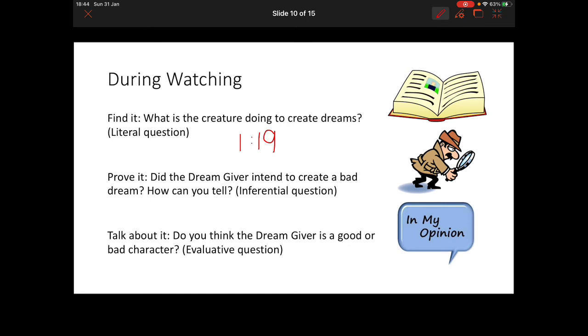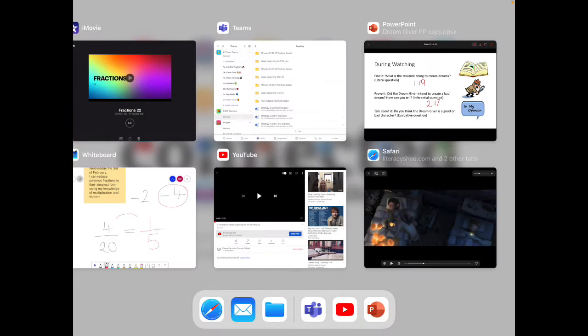Our next question. This is a prove it question, an inferential question. So that's why I've got a little detective next to this question as we have to use our text clues and our prior knowledge to help us answer this. Did the Dream Giver intend to create a bad dream? How can you tell? If you go to 2 minutes and 17 seconds on the clip, it will give you a little hand to let's look.